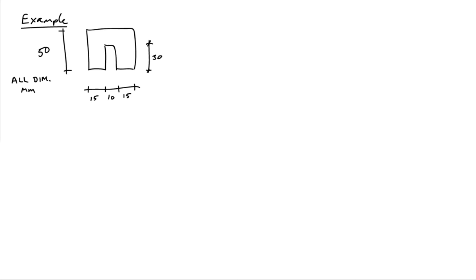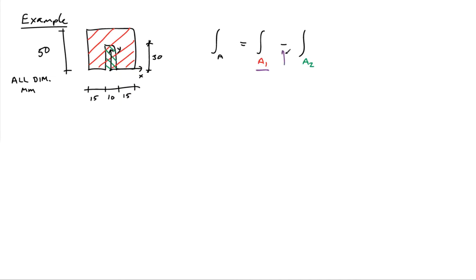One could think of breaking this up into three rectangles, but I want to show you a way to do this with just two rectangles. I'll break the area up into two parts: area A1, which is the entire rectangular area of 50 by 40, and then subtract the integral over A2, which is the area of the cutout. That gives me the total integral of the system.